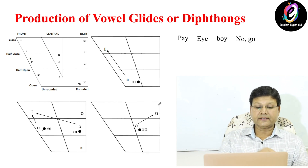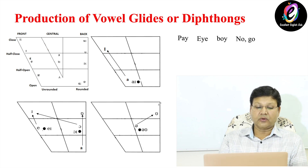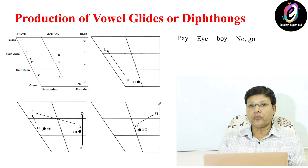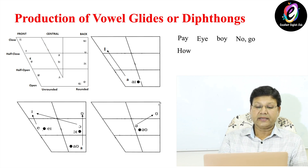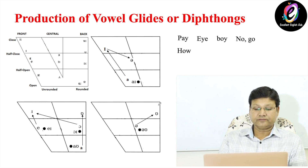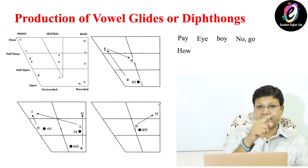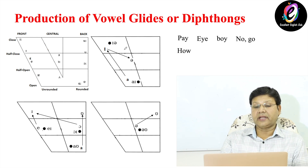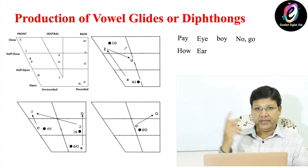The next diphthong is A-U, as in 'how.' We use this diphthong for that sound. Next is I-A — as in 'ear' and 'here.'